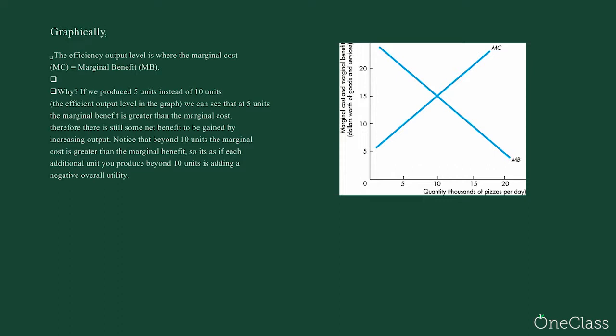When the marginal cost and marginal benefit curves cross each other, that is the efficient point. Output is at an efficient level when marginal cost equals marginal benefit.